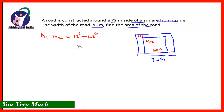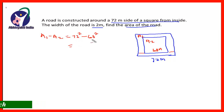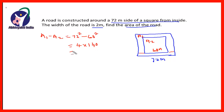Let A1 be the area of the outer square and A2 be the area of the inner square. Therefore A1 minus A2 equals 72 squared minus 68 squared. Using the identity A² − B² = (A − B)(A + B): A minus B is 4, and A plus B is 140. So the product is 4 × 140 = 560. The area of the road is 560 square meter.